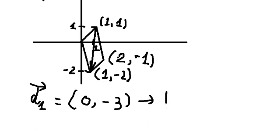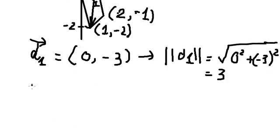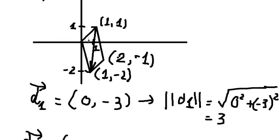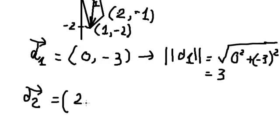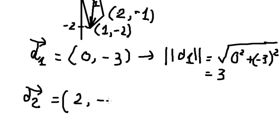Now we can find the first length D1. That is the square root of 0 squared plus (-3) squared, which gives us 3. Now we have the second diagonal vector D2: 2 minus 0 gives 2, and negative 1 minus 0 gives negative 1.